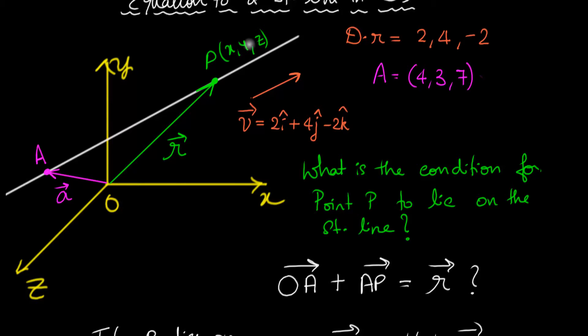If this random point is x, y, z, then the position vector r is just x i cap, y j cap, and z k cap. You get that?